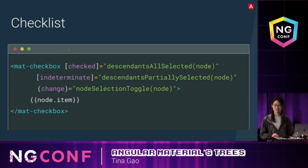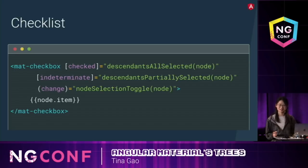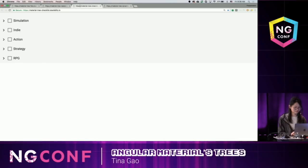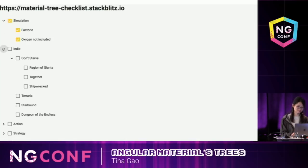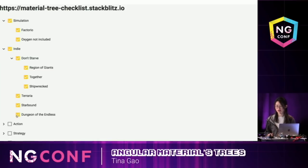Next, I'd like to show you a checklist. Here we put a checkbox in the tree node. The checkbox is partially selected when some of the children are selected, and it's selected when all the children are selected. Here we can check the parent checkbox and all the children are selected. We can select a child and the parent is partially selected. When we select all the children, the parent is automatically checked.